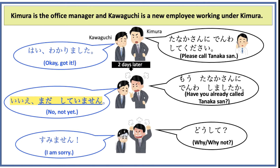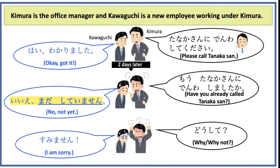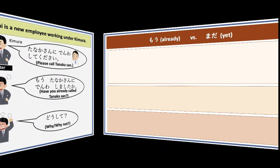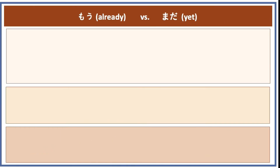Please know that Kawaguchi says, Iie, mata shite imasen, instead of saying, Iie, shimasen deshita — No, I didn't call Tanaka-san. What is the difference between these two sentences? There are several ways to say I did something or I did not do something in Japanese.